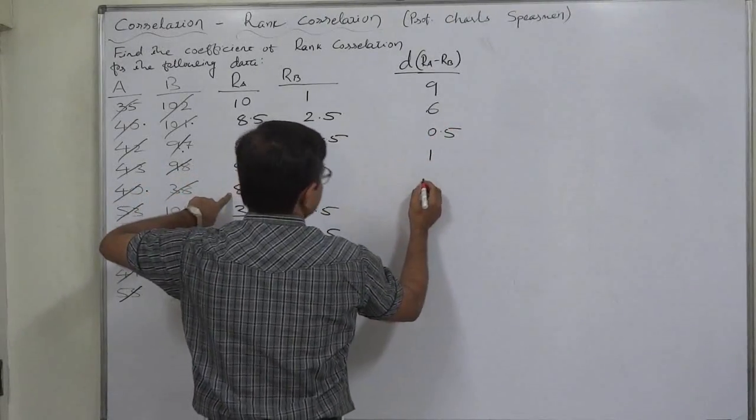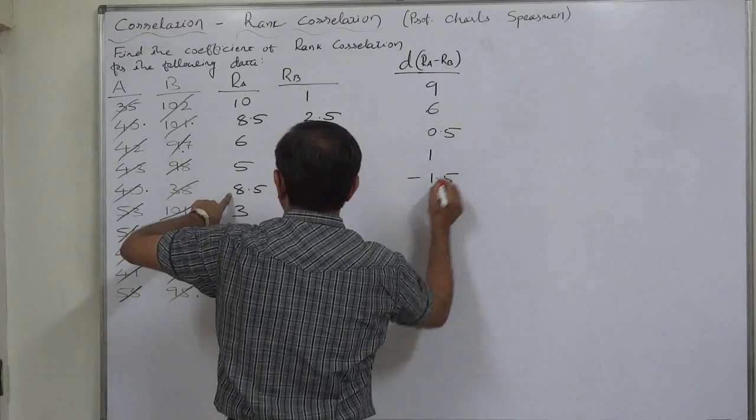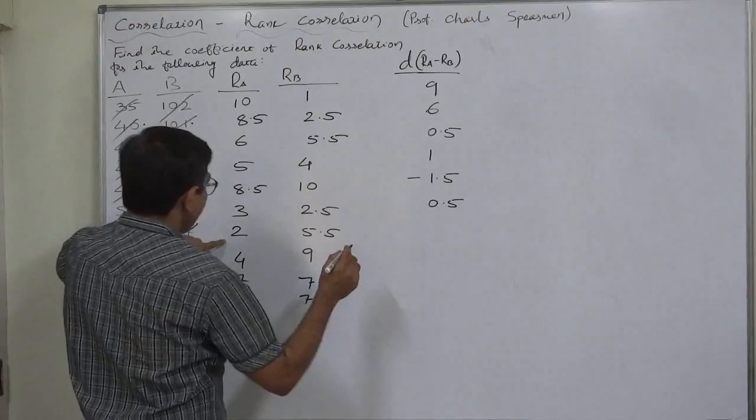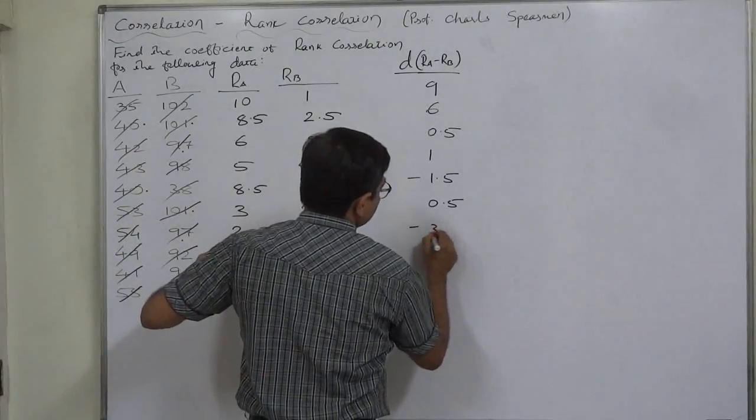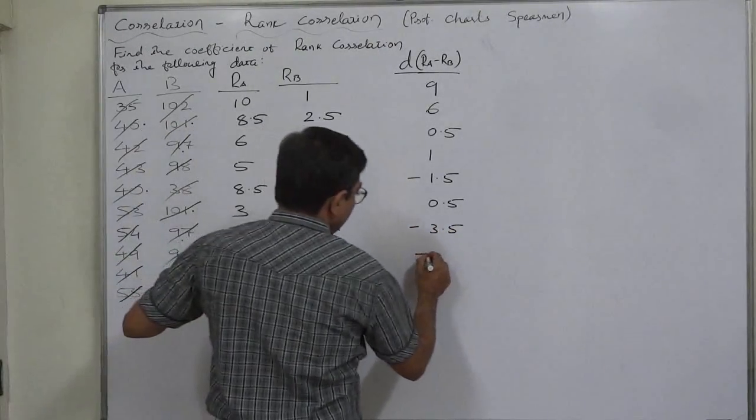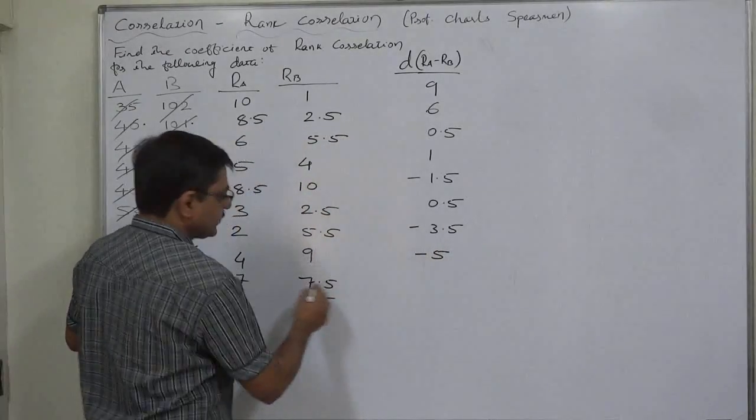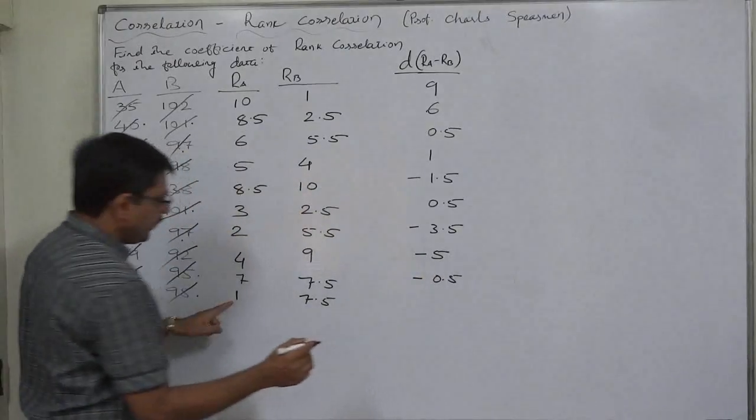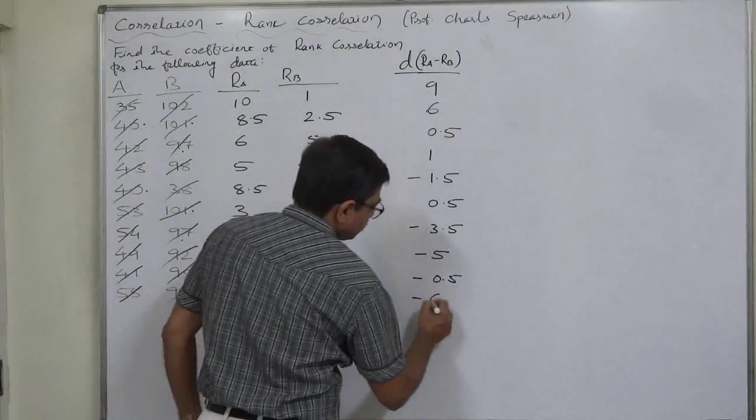8.5 minus 10, minus 1.5. 3 minus 2.5 is 0.5. 2 minus 5.5 is minus 3.5. 4 minus 9 is minus 5. 7 minus 7.5 is minus 0.5 and 1 minus 7.5 is minus 6.5.